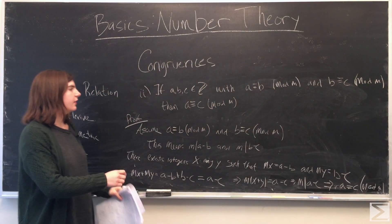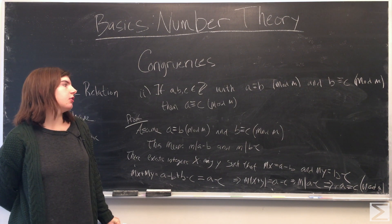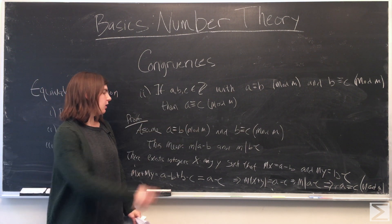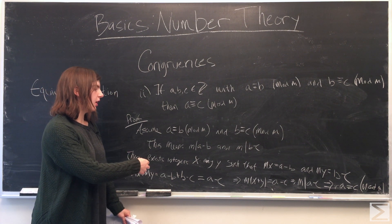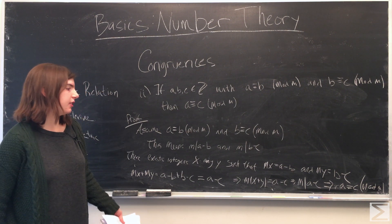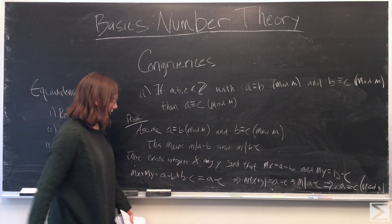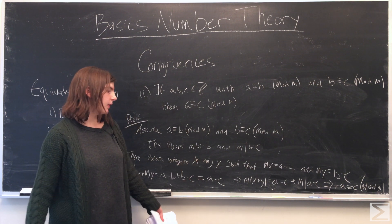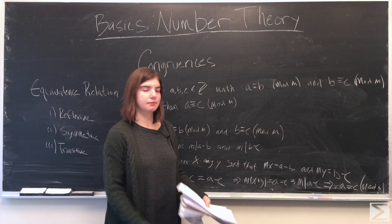The transitive property says that if a, b, and c are integers with a congruent to b modulo m and b congruent to c modulo m, then a is congruent to c modulo m. For the proof, we assume a is congruent to b and b is congruent to c modulo m, meaning m divides a minus b and m divides b minus c. There exist integers x and y such that mx equals a minus b and my equals b minus c. Adding these two equations, mx plus my equals a minus b plus b minus c. The b's cancel, and factoring out m gives m times (x plus y) equals a minus c, which implies m divides a minus c, so a is congruent to c modulo m.